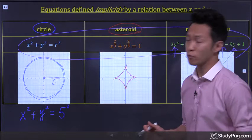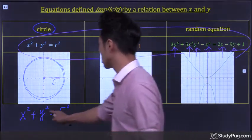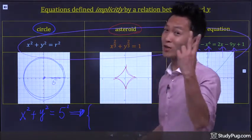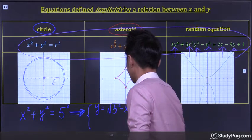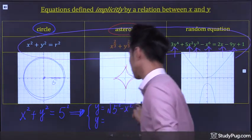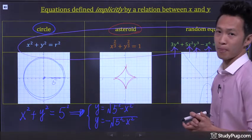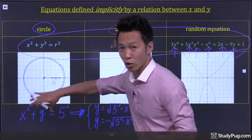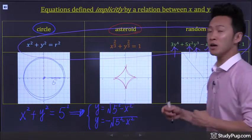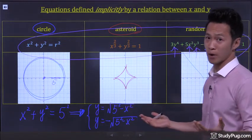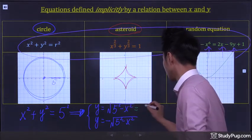In some cases, it is possible to solve an equation for y explicitly as a function of x. For example, the circle equation: if we solve for y, we get two answers — y equals the square root of 5 squared minus x squared, and y equals negative square root of 5 squared minus x squared. Once we convert a circle equation to an explicit function, finding the derivative is easy — all we have to do is apply the power rule along with the chain rule.